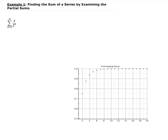In this example, we want to find the sum of a series by examining the partial sums. We're given the summation of one over two to the power n, going from n equals one to infinity. First, what we have to do is look at the sequence part of this series. The sequence part is one over two to the n.